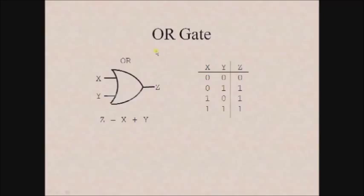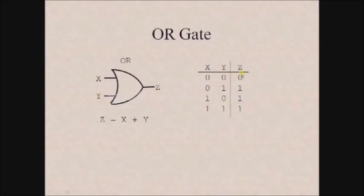Now let us see the OR gate, which is similar to the AND gate in that it accepts more than one input but provides only one output. This is the symbol for the OR gate with two inputs x and y and output z. The output expression is z equals x plus y, or x OR y. The truth table shows the output becomes 1 when one or more inputs of the OR gate is 1. If all inputs are 0 then the output is 0.